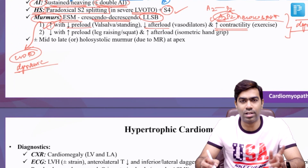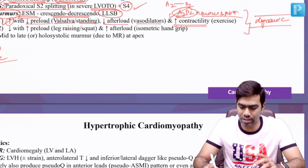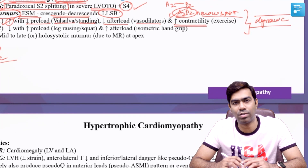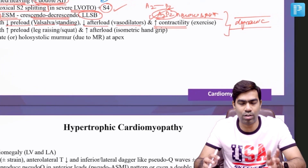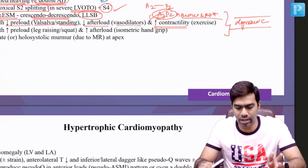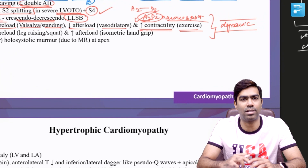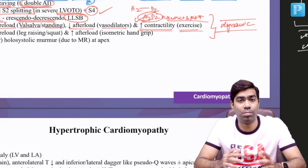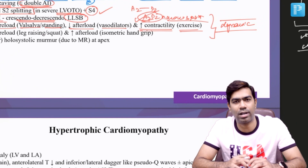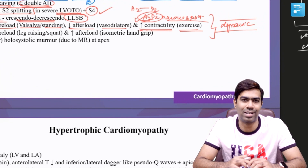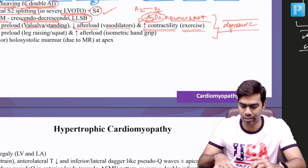Conditions that reduce preload include Valsalva, standing, and diuretics. Conditions that reduce afterload include vasodilators like nitroprusside or amyl nitrate inhalation. Conditions that increase cardiac contractility — such as exercise and post-PVC states in the cath lab — can increase the obstruction gradient and increase the murmur as well.